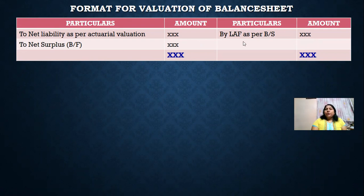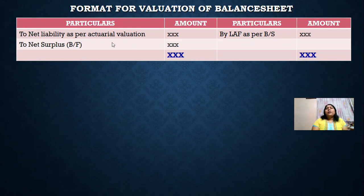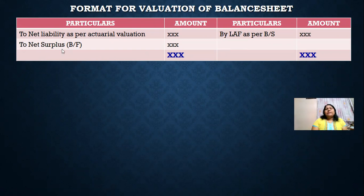You need to show only the closing life assurance fund here. If the problem gives an opening life assurance fund and you are preparing the revenue account, you will come to know the surplus. That surplus has to be combined with the opening life assurance fund to get the closing life assurance fund. The closing life assurance fund is then compared with the net liability to know the net surplus. This is how a life insurance company prepares the valuation of balance sheet.